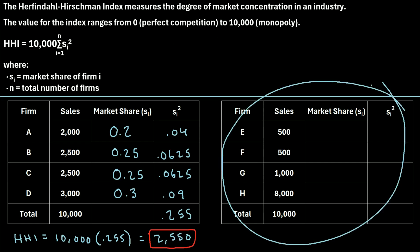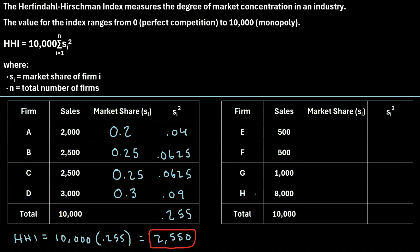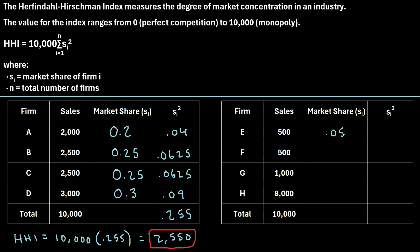Now let's look at this second industry. We have four firms once again, and right away we can see that firm H really jumps out because they have 8,000 of the total 10,000 sales of the market — way more than all the other firms. Calculating market shares: firm E has 500 divided by 10,000, which is 0.05; firm F has the same, 0.05; firm G has 1,000 divided by 10,000, which is 0.1; and firm H has 8,000 divided by 10,000, which is 0.8.